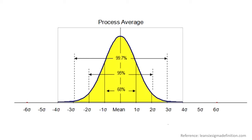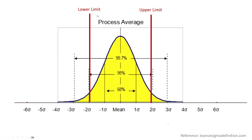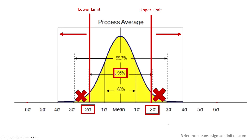Now let's say we have a product with a lower and upper specification limit, and we can see by the data points that we have less variation than before. We have less waste than with our one sigma process. This means we have a two sigma process, as 95% of what we're producing is deemed acceptable within the limits, with only a smaller amount deemed defects. This process is definitely better than one sigma, however there's still waste that needs to be addressed. We still need to fix this process even though 95% is good, because we have too much spread from our mean, and if something were to go wrong we could easily fall back into a one sigma process.